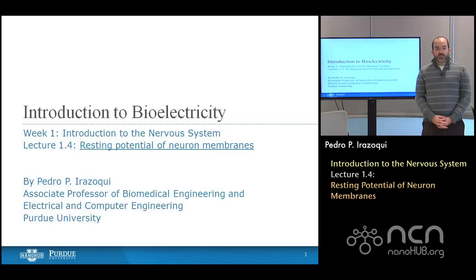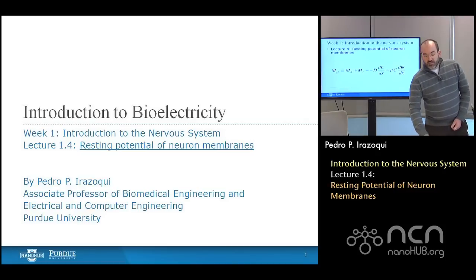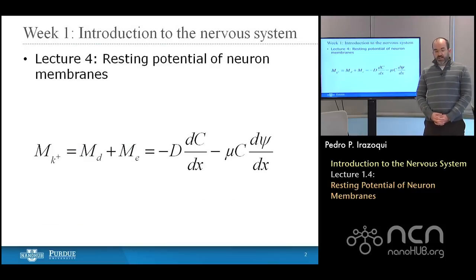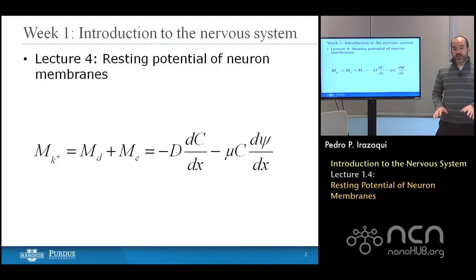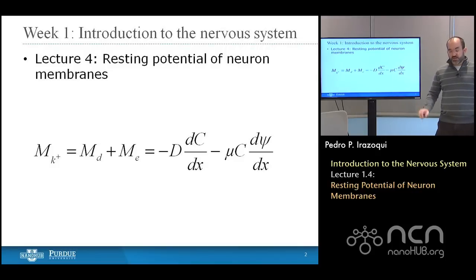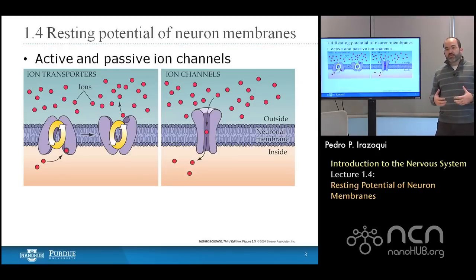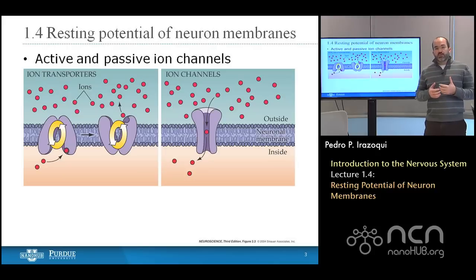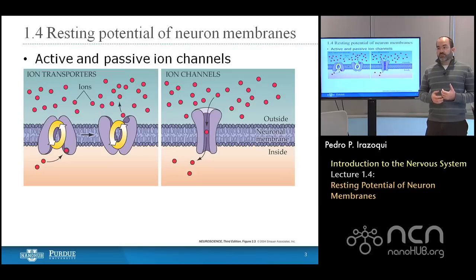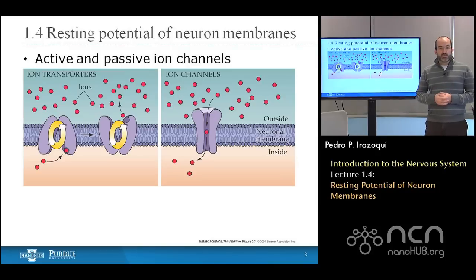Hello and welcome to Nanohub U's introduction to bioelectricity. This is week one, lecture four, in which we will be discussing the resting potential of neuron membranes and how those resting potentials come about. Before we dive into the math in lecture five, I want to talk about an intuitive understanding of what resting membrane potentials are, why they matter, why they come about, and almost as importantly, those factors that are not important in creating a resting membrane potential.